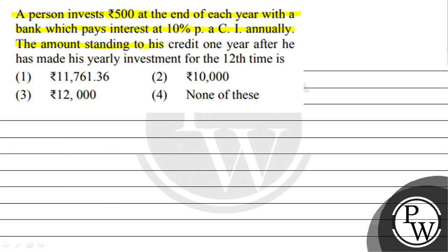The amount standing to his credit one year after he made his yearly investment for the 12th time is - four options are given. We have to choose the correct one.